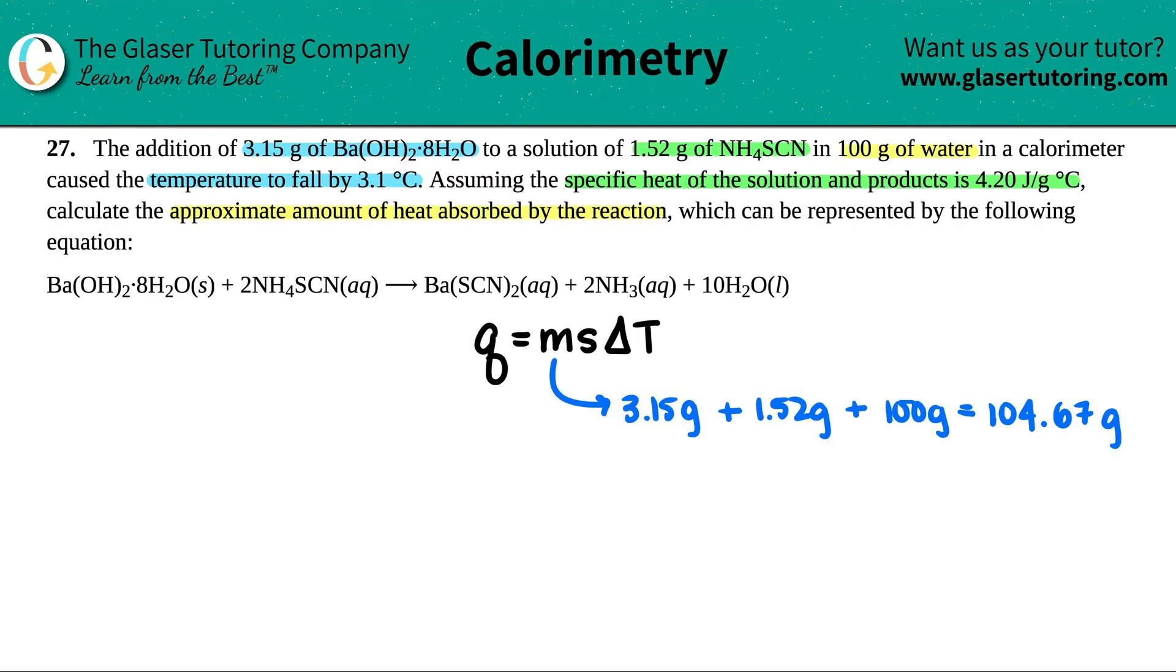Next is the specific heat. They told us the specific heat of the solution was 4.20 joules per gram degree Celsius. Then the delta T - they said this caused the temperature to fall by 3.1 degrees Celsius. They did not give me a starting or final temperature, just the change.